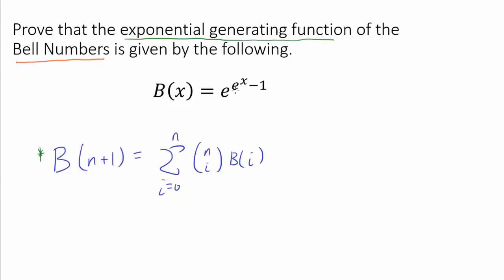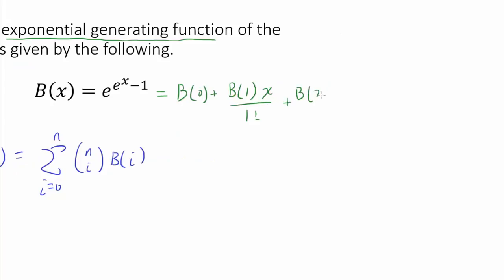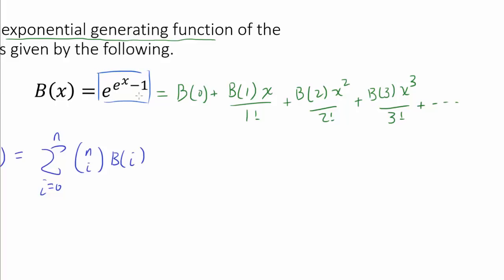What do I mean by the exponential generating function? I'm saying that e to the e to the x minus 1 has the Taylor series expansion about 0 of b(0) plus b(1)·x over 1 factorial plus b(2)·x² over 2 factorial plus b(3)·x³ over 3 factorial, and so on. So e to the e to the x minus 1 is in some sense a compact representation of the Bell numbers, and you can use your favorite mathematical software to find this Maclaurin expansion and thereby find the values of the Bell numbers.